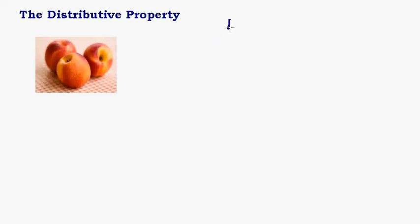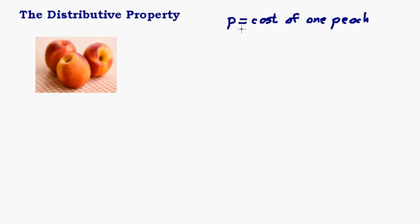Let's say that P equals the cost of one peach. I'm at the store — my wife sent me to the store — and I am to buy three peaches for a recipe. So what would be the cost of these three peaches if the cost of one peach is P cents? The cost of these three peaches would be three times P, or three times the cost of one peach.